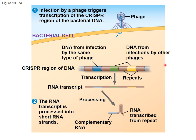Here's how bacteria protect themselves: a phage triggers the transcription of the CRISPR region of the bacterial DNA. The CRISPR region contains DNA sequences from infection by the same type of phage and other types of phages, with repeat regions in between. Transcription produces an RNA transcript, and after RNA processing it is cut up to form short RNA loop-like structures. The repeat regions cause the looping, allowing the RNA to hydrogen bond with itself and create this loop-like structure.